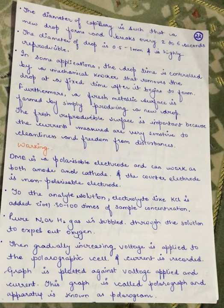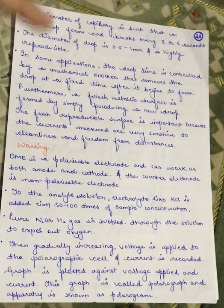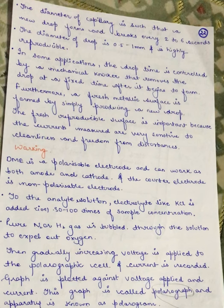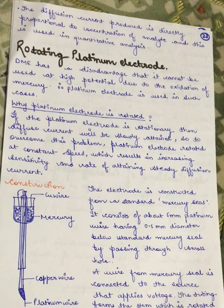We plot the readings as a graph of voltage applied versus current. This graph is called the polarogram. The diffusion current produced is directly proportional to the concentration of the analyte and is used in quantitative analysis.